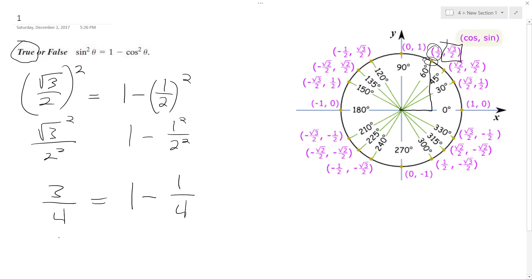So one minus one fourth is just equal to four over four minus one over four, three over four. So that proves it there, that this is true.